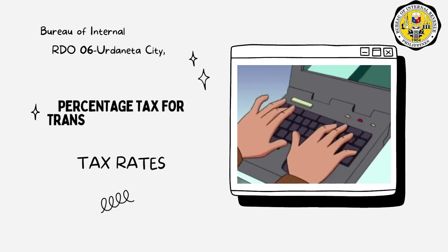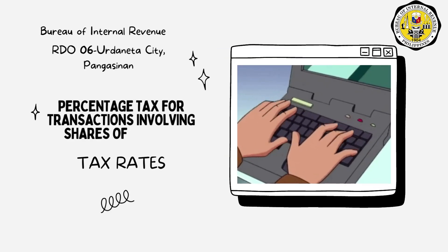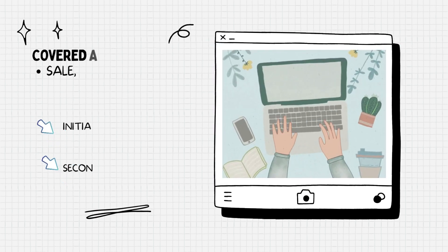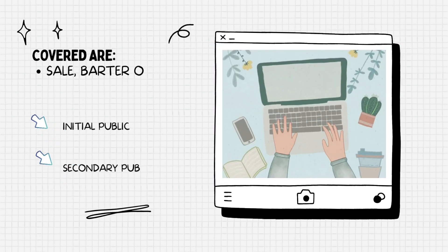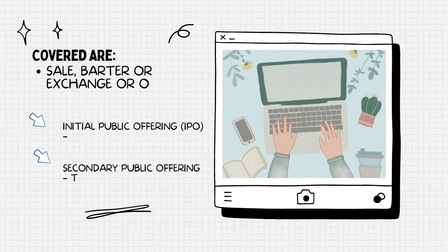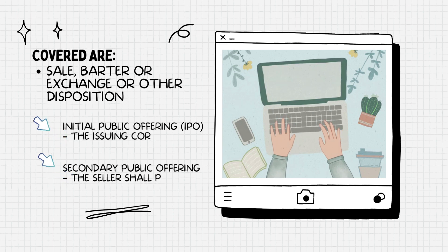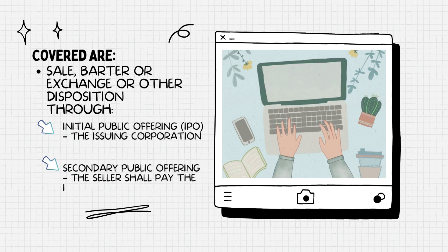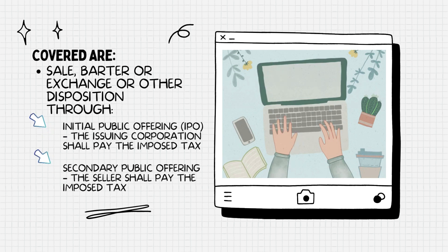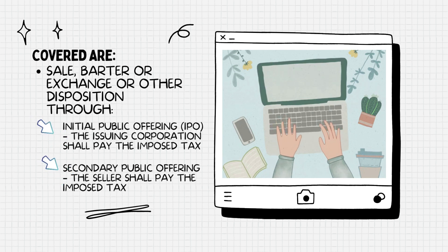Percentage tax for transactions involving shares of stocks — tax rates. Covered are sale, barter, exchange, or other disposition. For initial public offering, the issuing corporation shall pay the imposed tax. For secondary public offering, the seller shall pay the imposed tax.